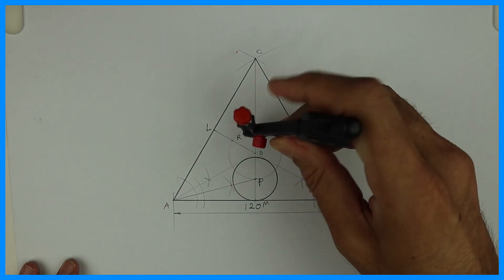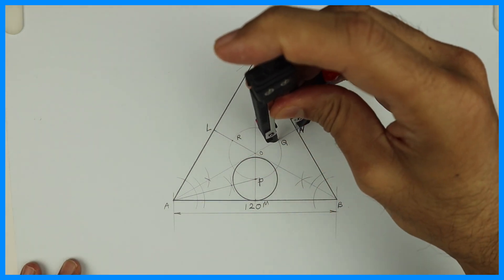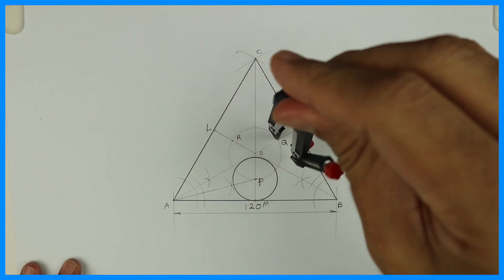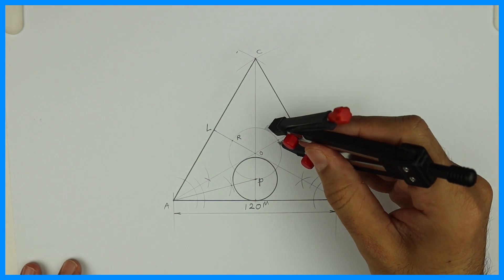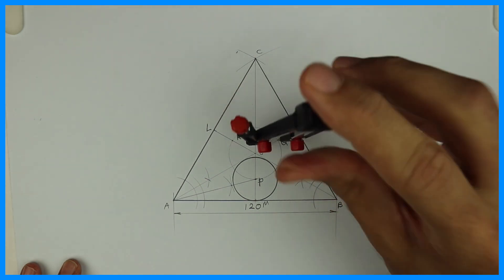Then you take Q to N and draw a circle. So again we are drawing a circle which is touching one side BC and other two circles.